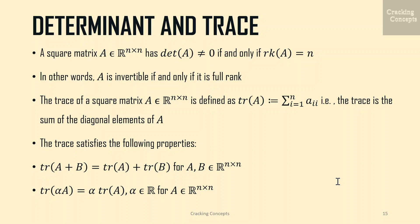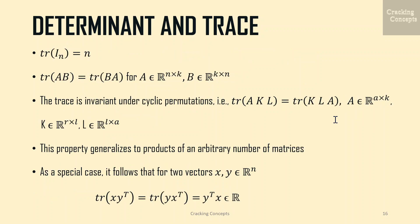Now we will look into what a trace is. The trace of a square matrix A is defined as tr(A) = Σ_{i=1}^{n} a_{ii}, that is, it is the sum of the diagonal elements of A. The trace satisfies the following properties: tr(A+B) = tr(A) + tr(B) for A, B in ℝⁿˣⁿ; tr(αA) = α·tr(A) for scalar α; tr(Iₙ) = n; and tr(AB) = tr(BA) for A in ℝⁿˣᵏ and B in ℝᵏˣⁿ. It can be shown that only one function satisfies all four of these properties together, which is the trace.